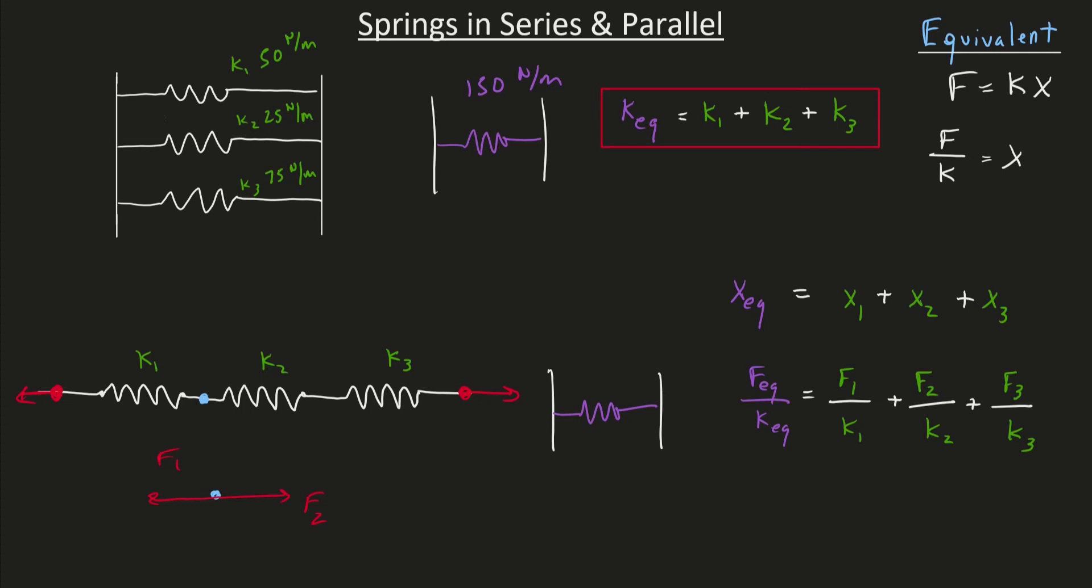Because of that, Newton's second law says that these two forces must equal each other. And the same argument can be said here. This blue point right here isn't moving. And therefore, I conclude that the force in spring 2 must equal the force in spring 3 for there to be balance, for that blue point not to be moving. So what I conclude here is that the force in each one of these springs must actually be equal.